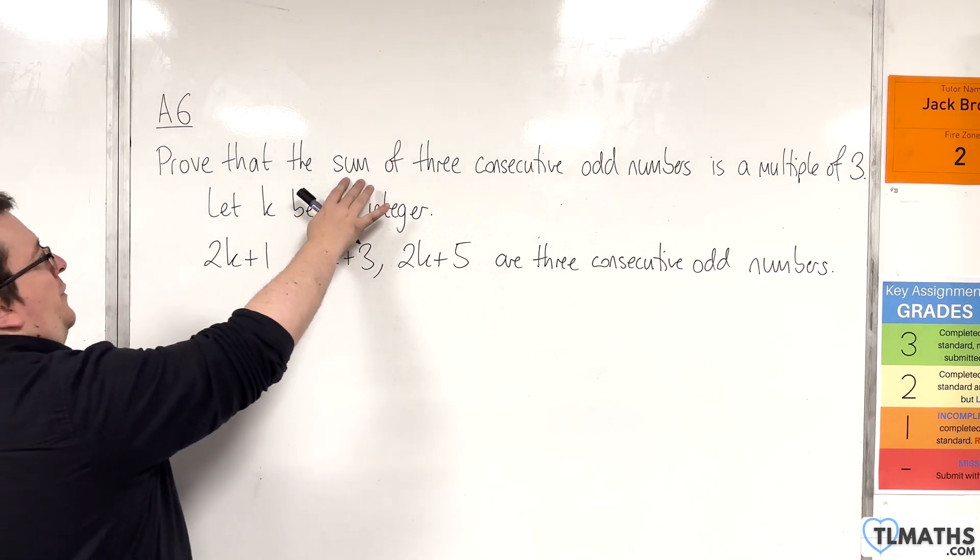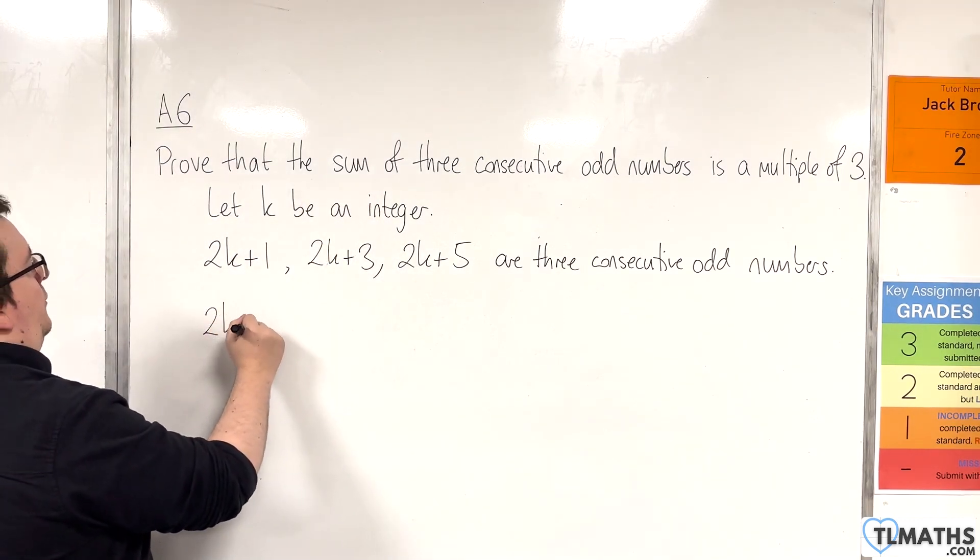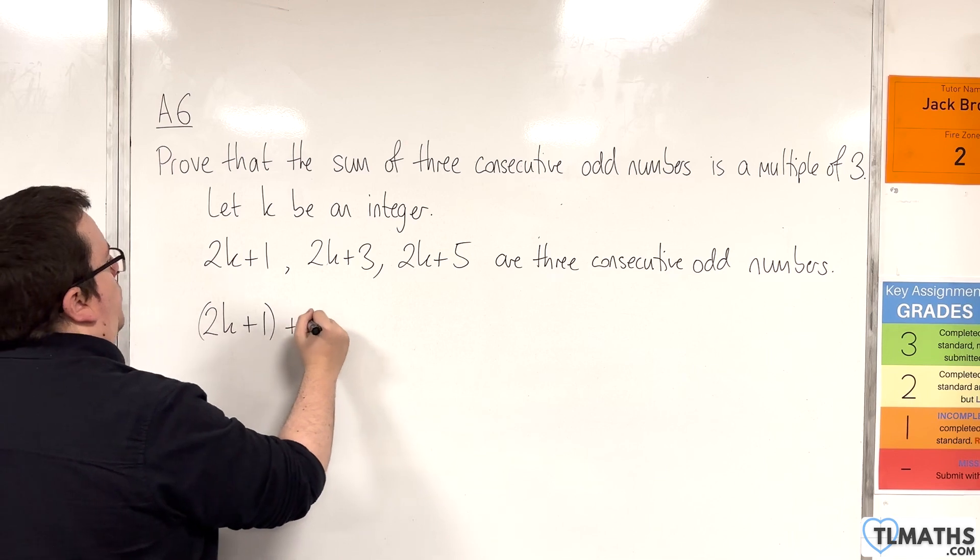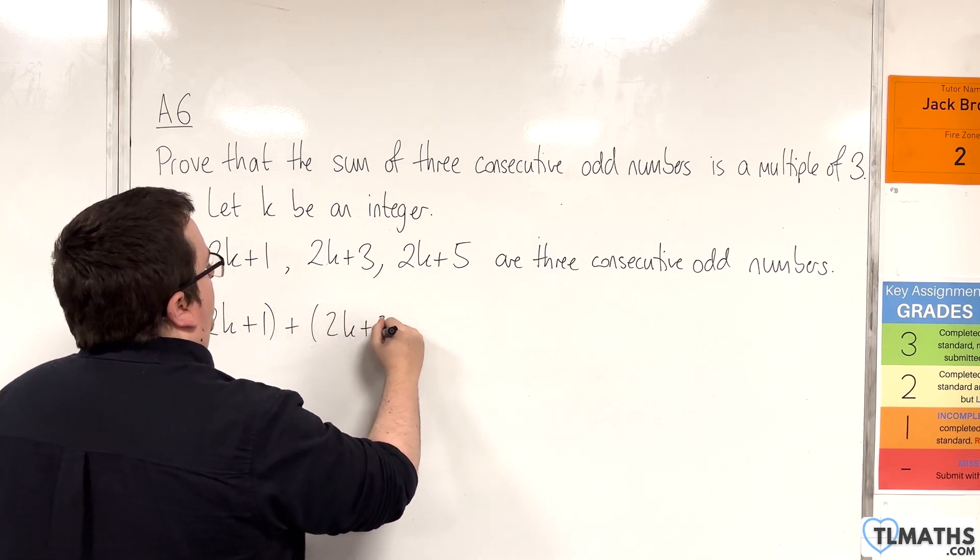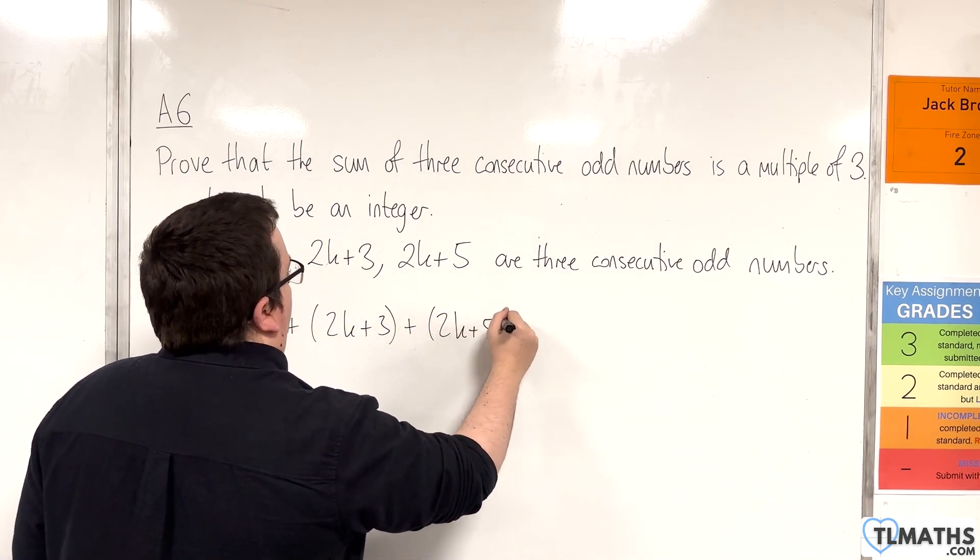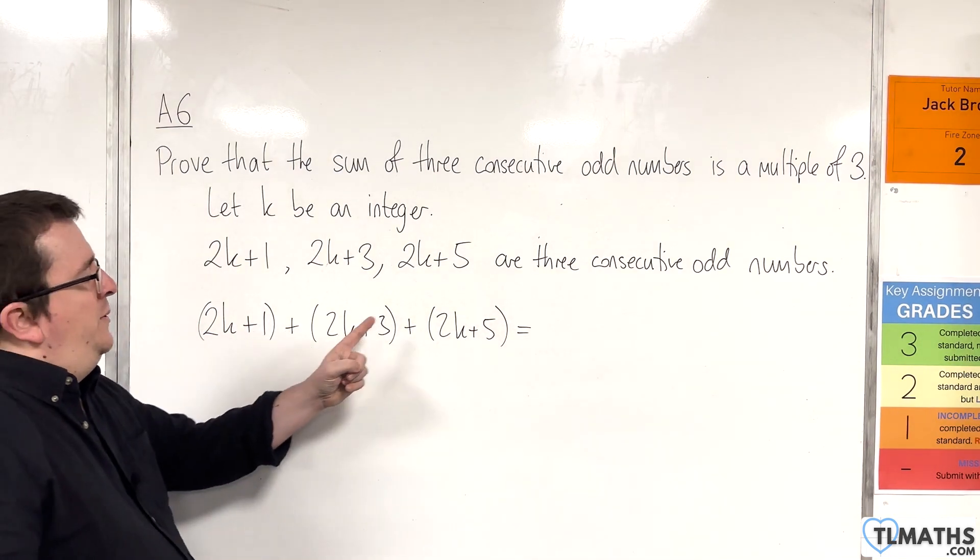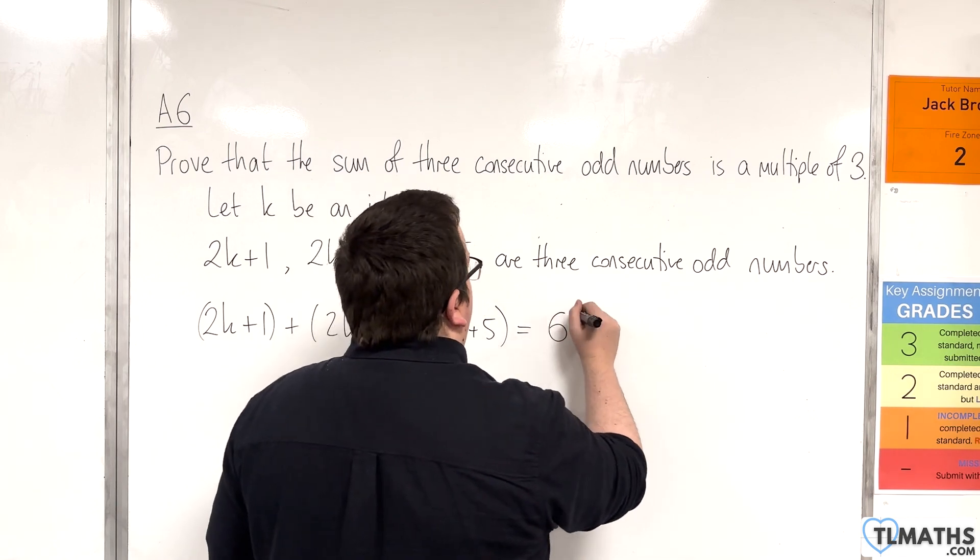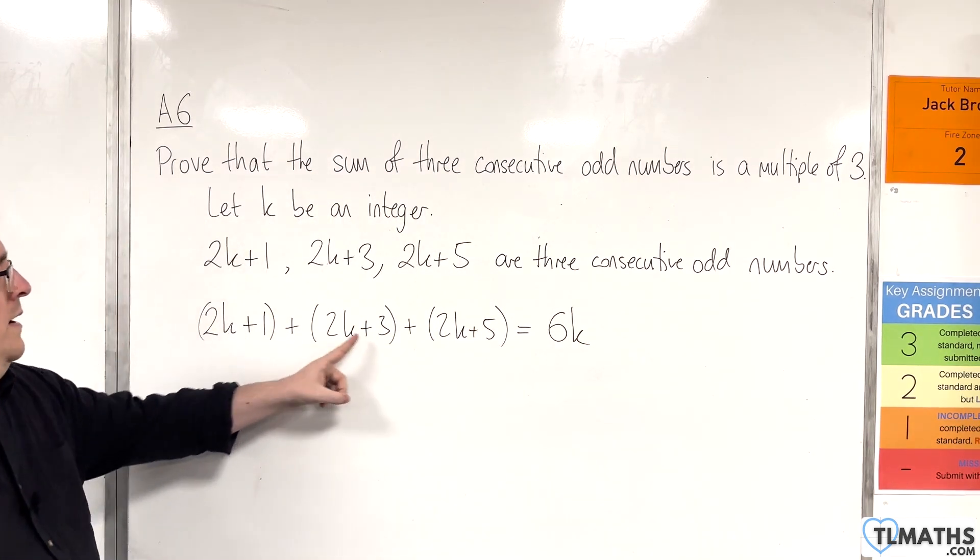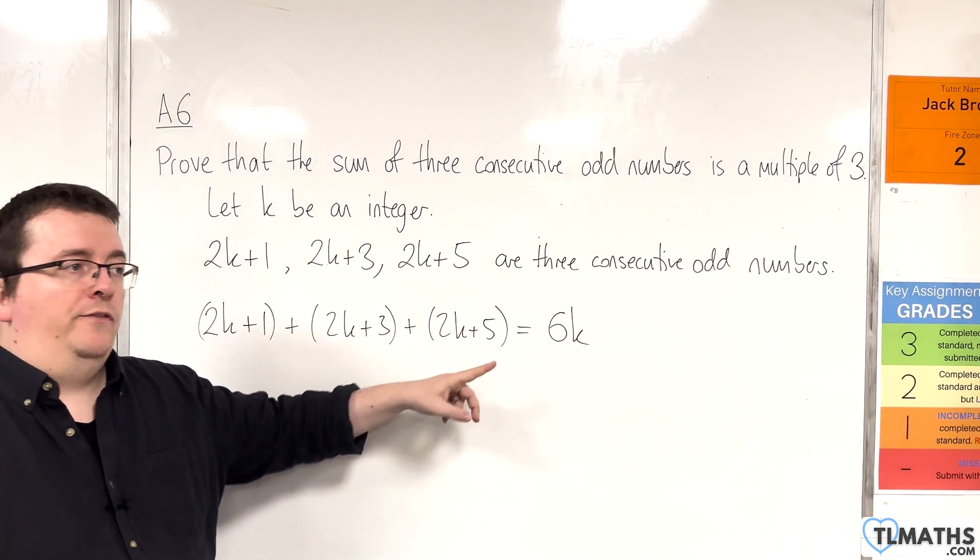So I need to find the sum. I'm going to add these three together: 2k plus 1 plus 2k plus 3 plus 2k plus 5. So I've got 2k plus 2k plus 2k is 6k, and I've got 1 plus 3 plus 5, which is 9.